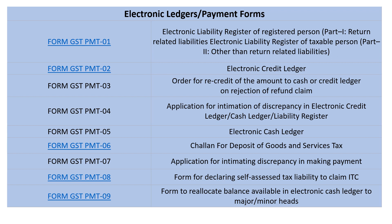GST PMT-06 is the challan for deposit of goods and services tax. GST PMT-07 is the application for intimating discrepancy in making payment. GST PMT-08 is the form for declaring self-assessed tax liability to claim ITC. GST PMT-09 is the form to reallocate the balance available in the electronic cash ledger to major or minor heads.